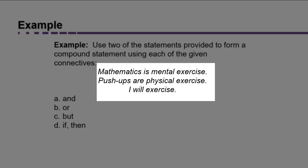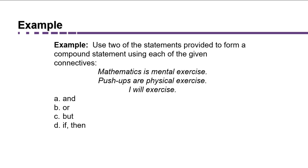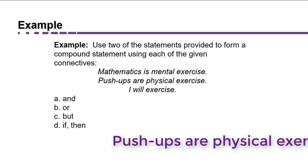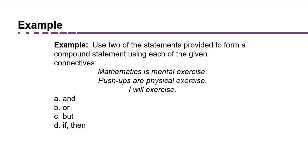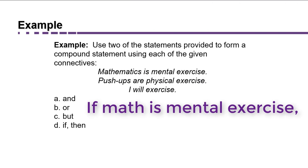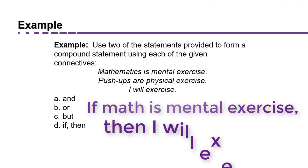For instance: 'Mathematics is mental exercise,' 'push-ups are physical exercise,' 'I will exercise.' If we connect two with 'and,' we could say: 'Push-ups are physical exercise and I will exercise.' Or using the connective if-then — which is interesting because you put 'if' in front of one component and 'then' in front of the other — you could have: 'If mathematics is mental exercise, then I will exercise.'